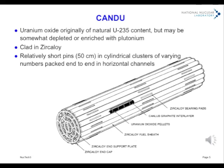CANDU fuel clusters, like those for the AGR, are cylindrical — about 4 inches in diameter and 20 inches long. Various internal arrangements are used.